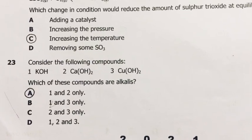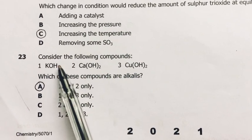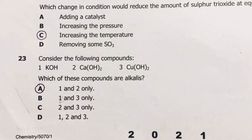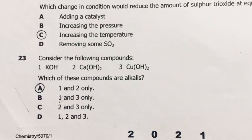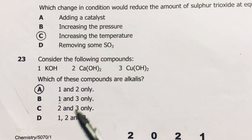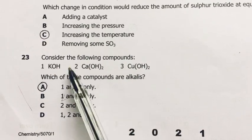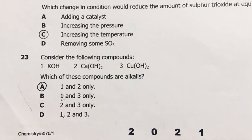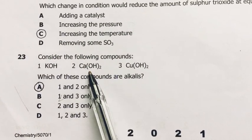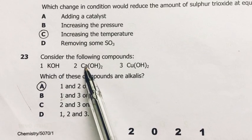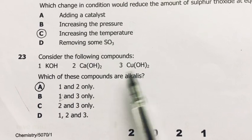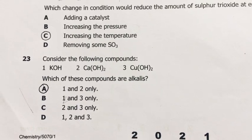Number 23, consider the following. This is potassium hydroxide, calcium hydroxide, and copper hydroxide. Which of these compounds are alkalis? One and two. All of these are bases. A soluble base in water is called an alkali. Therefore, the ones that are soluble in water are this one and this one. Group one, group two. This one is a transition element. Its hydroxide is insoluble in water. So our answer is A, one and two only.